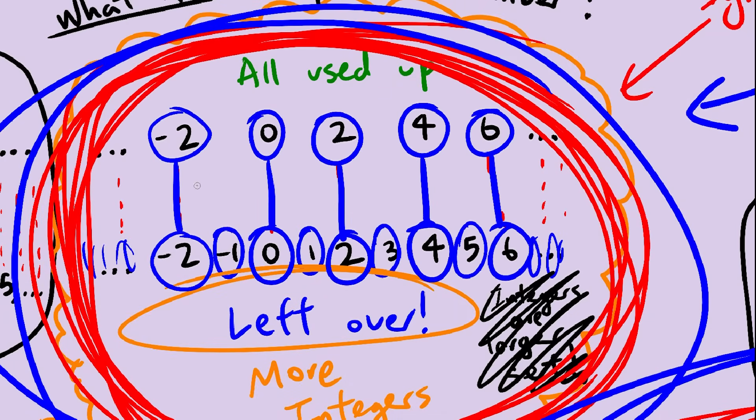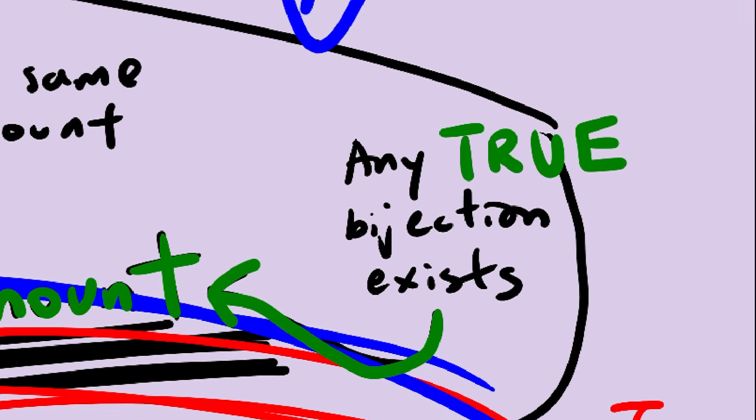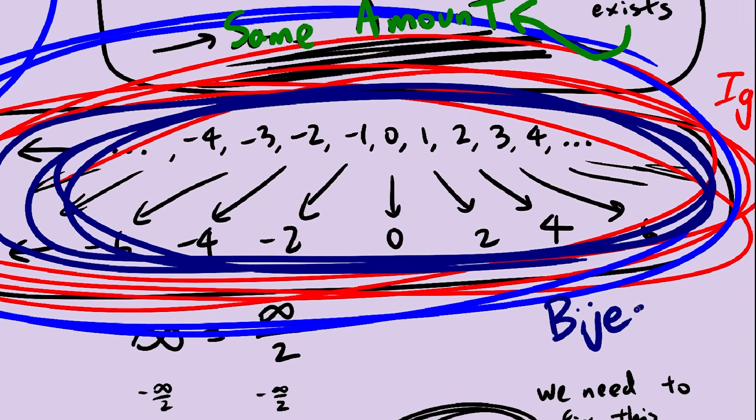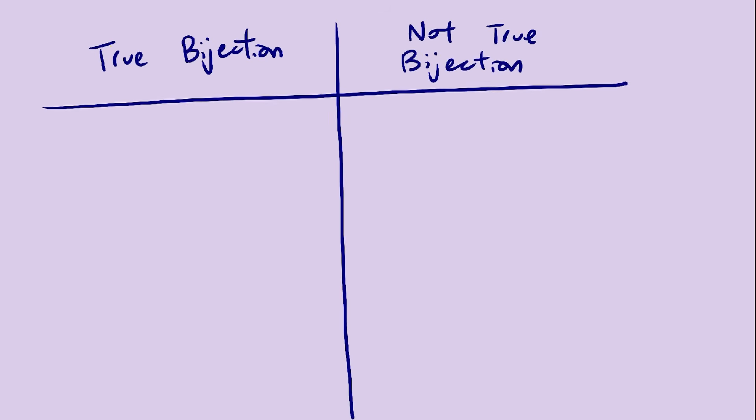So let's call this a true bijection. And remember that thing where if you have a bijection, the two sets are the same size, they have the same amount? This now only works for true bijections. So even though this is a bijection, it doesn't count, and infinity does not equal infinity over 2. We can define exactly what a true bijection is later on.